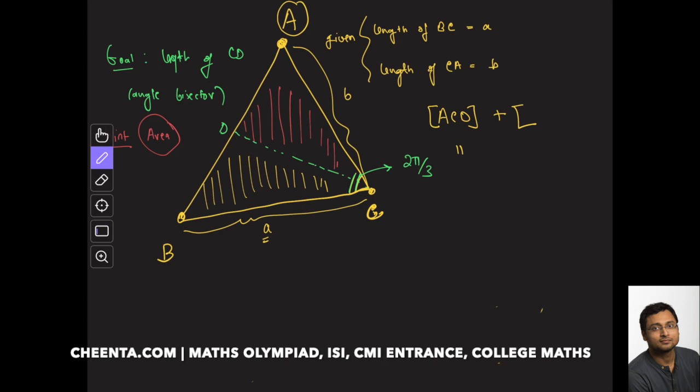...yellow one, which is BCD. You find out that value and you equate it with the area of triangle ABC, of course, because ADC and BDC, if you add this up, you get the entire triangle's area.